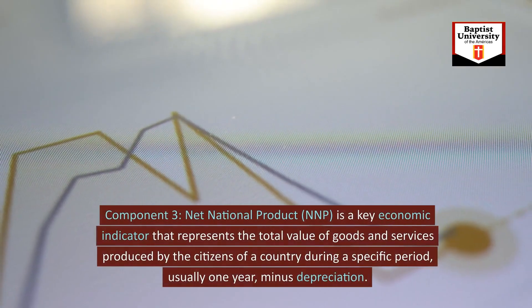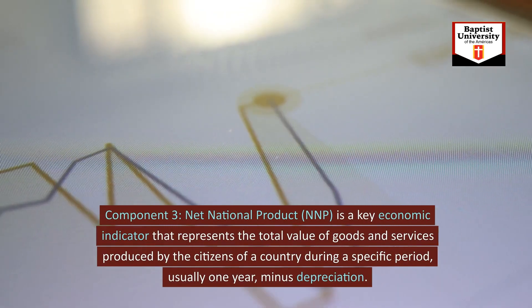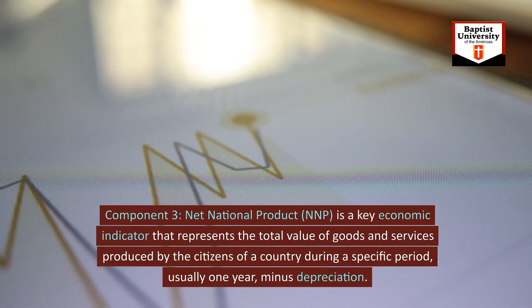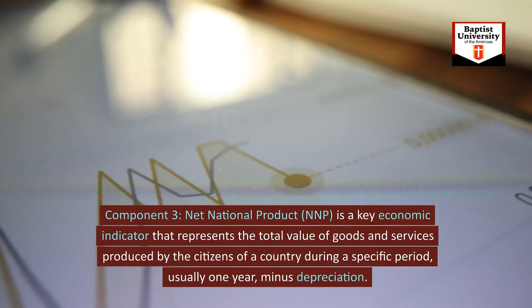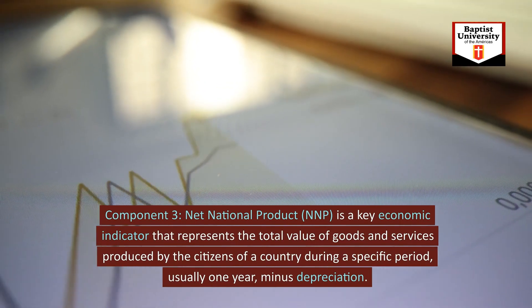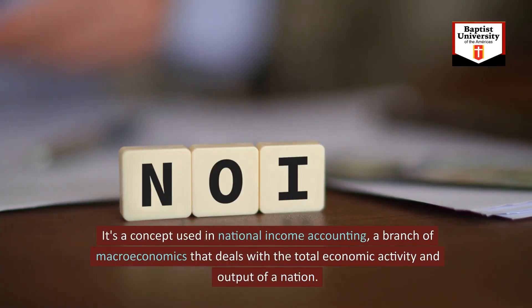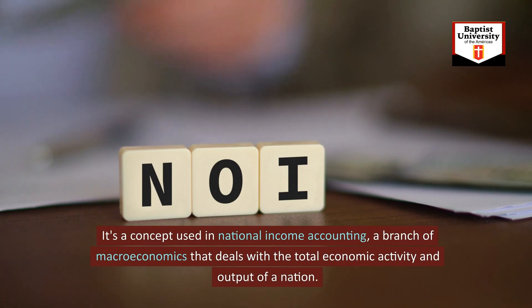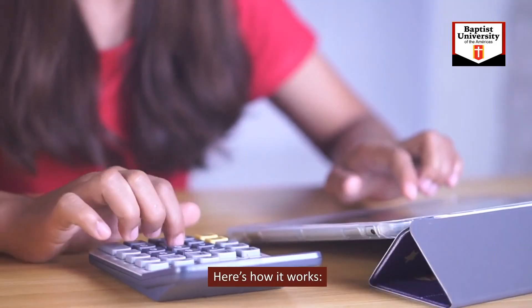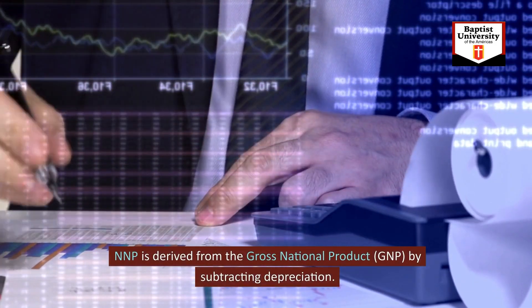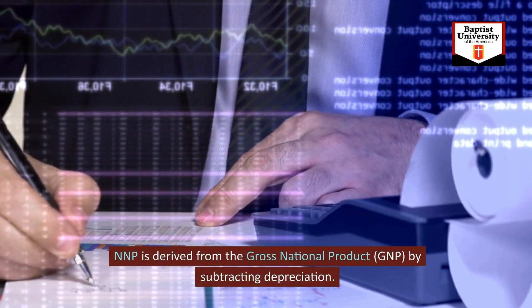Component 3: net national product (NNP) is a key economic indicator that represents the total value of goods and services produced by the citizens of a country during a specific period — usually one year — minus depreciation. It's a concept used in national income accounting, a branch of macroeconomics dealing with total economic activity. NNP is derived from the gross national product (GNP) by subtracting depreciation.